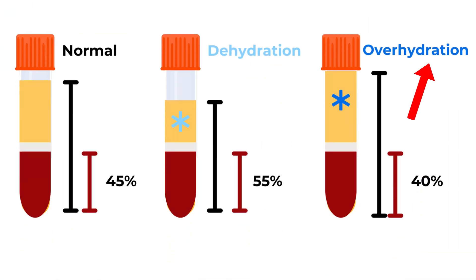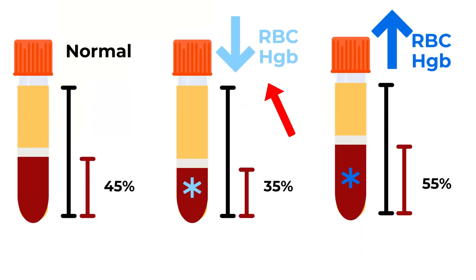These three calculations give us the exact reasons why hematocrit may be low or high. The first cause is changes in plasma volume. Since plasma is over 90% water, dehydration or overhydration will cause the opposite change in hematocrit — dehydration raises hematocrit, and overhydration lowers it. The second is changes in red blood cell number or hemoglobin, and this is a direct relationship: low red blood cells and low hemoglobin cause low hematocrit; high red blood cells and high hemoglobin cause high hematocrit.